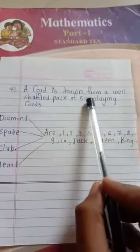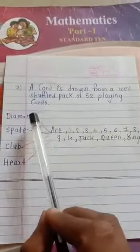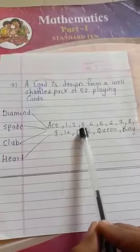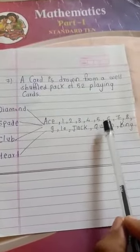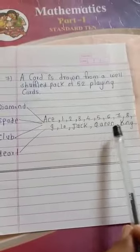A card is drawn from a well-shuffled pack of 52 playing cards. The sample space includes Diamond, Spade, Club, and Heart suits, with values 1, 2, 3, 4, 5, 6, 7, 8, 9, 10, Jack, Queen, King.